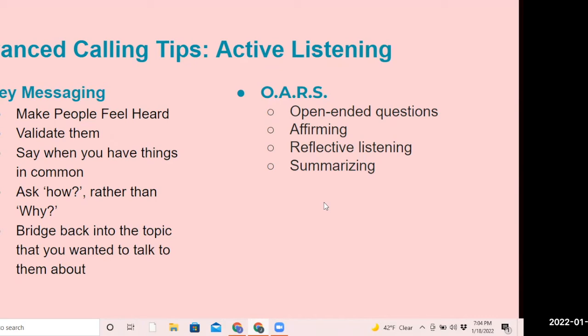Bridge back into the topic you wanted to talk to them about — especially in electoral organizing where you have a discrete objective and a key action item like voting. You want to try to bridge back to the core action item of how what you're talking about will be addressed by the candidate's platform or your organization's program. That brings us to the active listening method exercise of OARS: open-ended questions, affirmation, reflective listening, and summation.